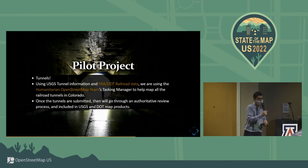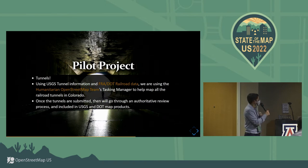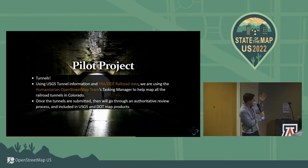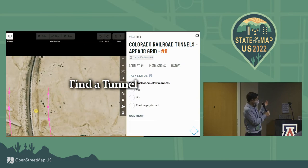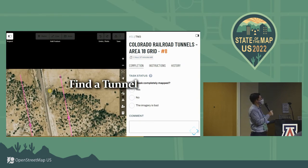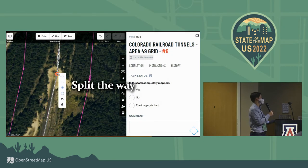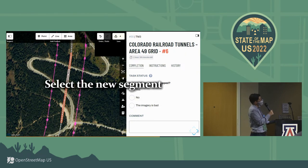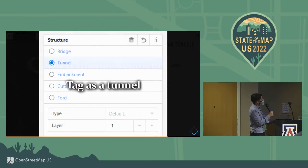Our pilot project is Railroad Tunnels. We already have railroad segments and we want to add tunnels to them. The process is: you find your tunnel, use iD editor to split the way, create a new segment, and tag it as a tunnel.